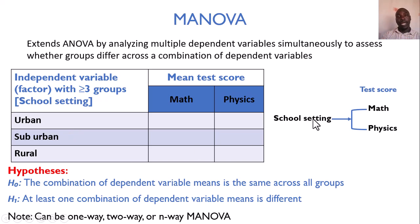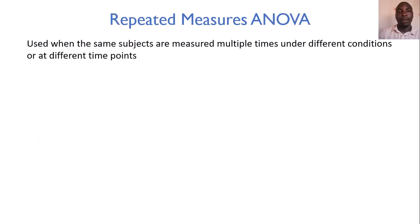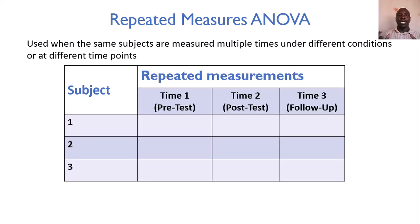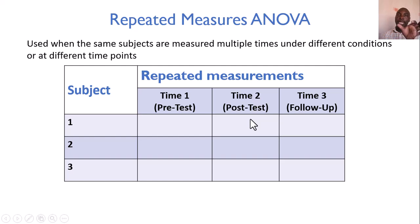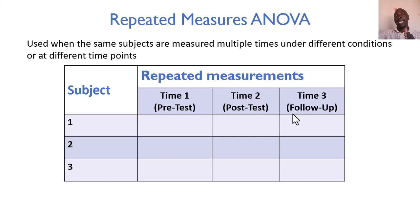Lastly, repeated measures ANOVA is used when the same subjects are measured multiple times under different conditions or at different time points. For example, if students were given a pretest before a training, their scores at time one (the pretest) are recorded; then a training is given, and their scores at time two (the post-test) are also measured, and possibly a follow-up measurement as well — the same participants being measured on the same thing over different time periods.